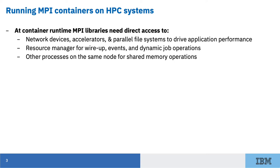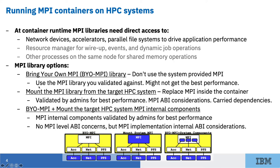Secondly, at runtime, the MPI library needs to interact with the resource manager on the nodes for wire-up, eventing, and dynamic job operations. This is critical for MPI processes to discover each other and connect early in application execution. Finally, the MPI library will need processes on the same node to have enough visibility of each other to establish shared memory segments. Let's discuss each in turn.